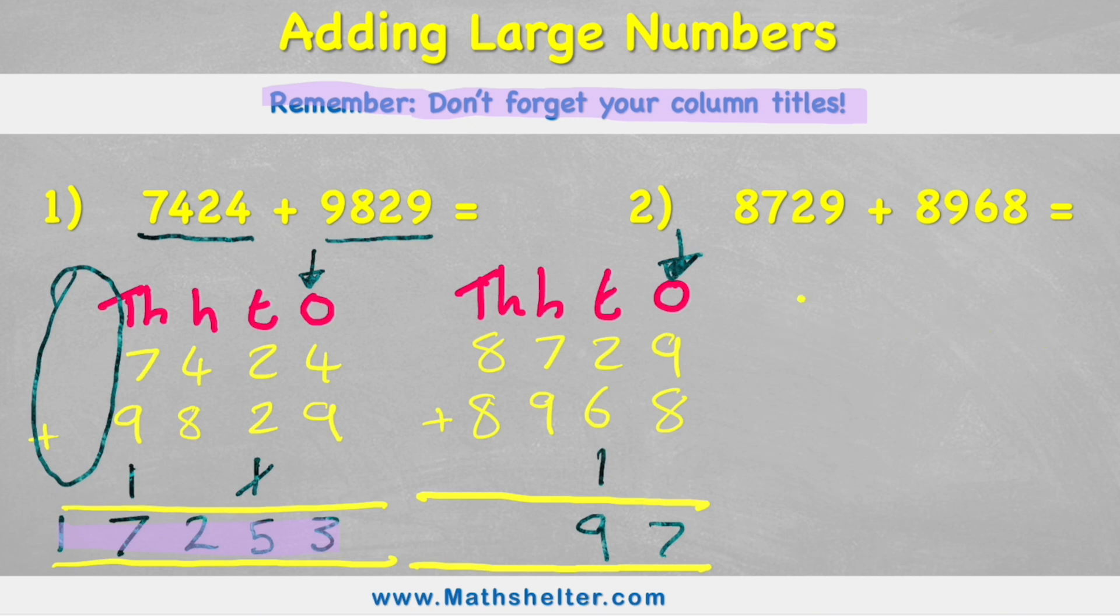Now looking in my 100s, I have 7 hundreds added to 9 hundreds. That equals 1,600s. So 1,600 would look like this. 1,600 or 1,600. So I have 1,600. So I can carry my 1 into the 1,000s column and put my 600 in the answer row.